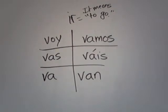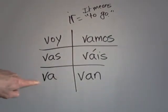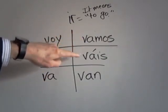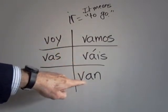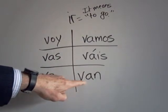The conjugation is: yo voy, tú vas, él va, nosotros vamos, vosotros vais, and ellos van. That's I go, you go, he goes, she goes, you go — usted va. We go — nosotros vamos. Y'all go when we live in Spain — vosotros vais. And they go — van. And you all go when we don't live in Spain — ustedes van.